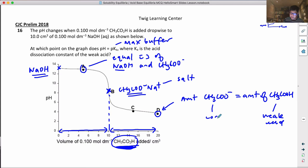So if they have the same concentration - I call this the weak acid and I call this the conjugate base - if you have equal amounts this is your maximum buffer. So that's how we do this question.